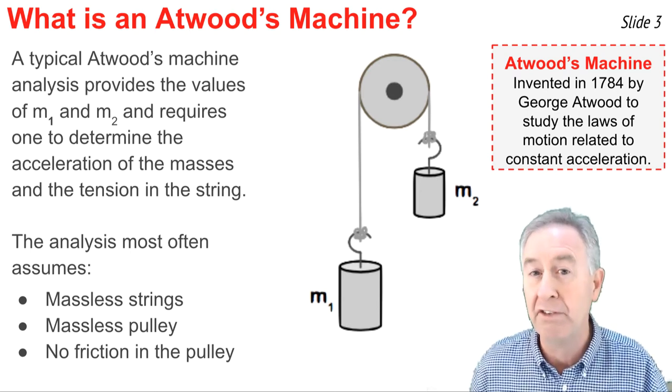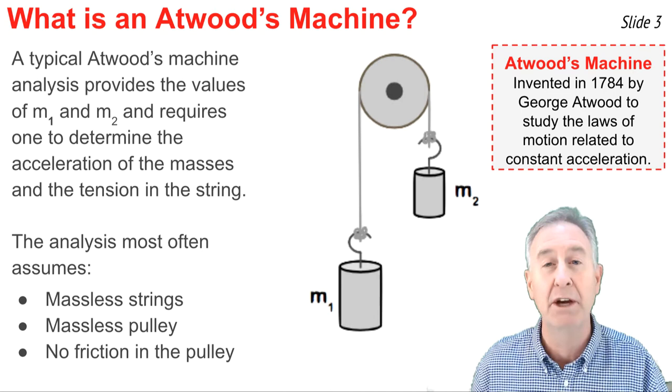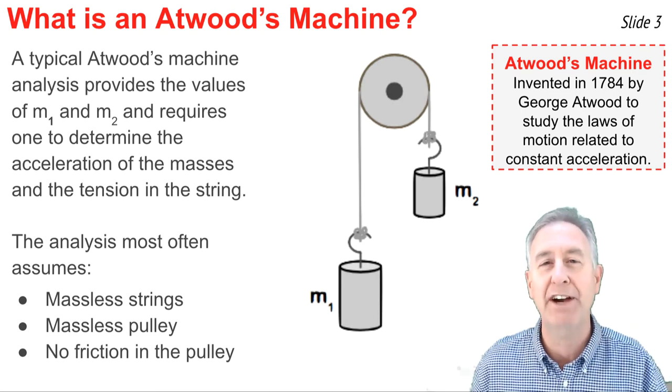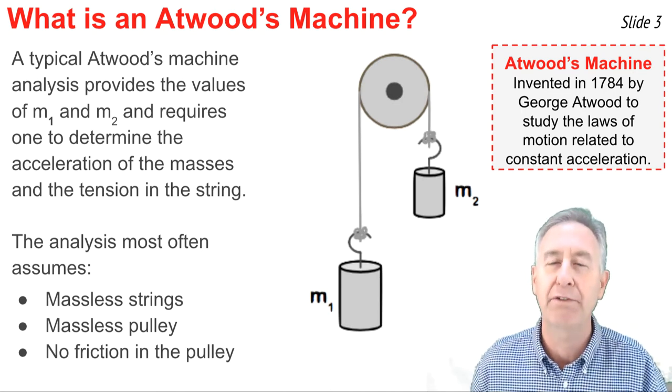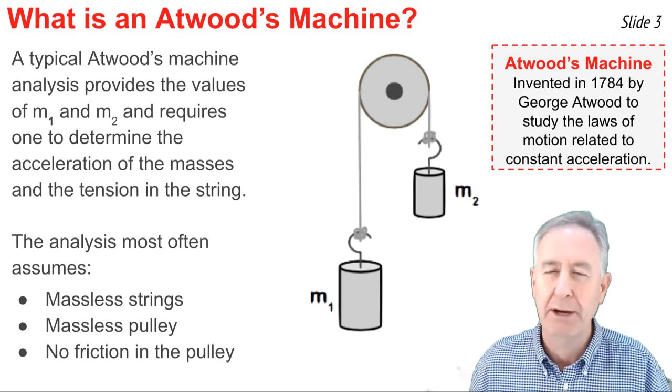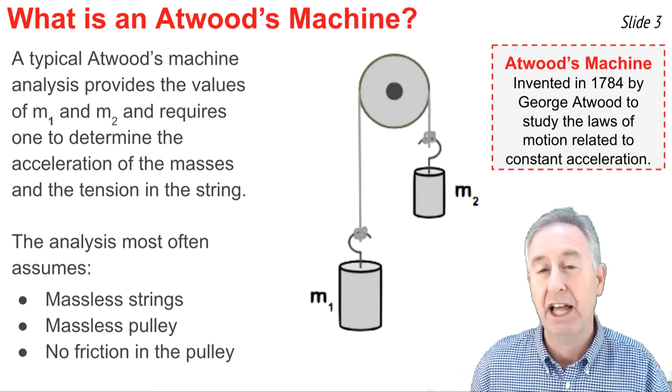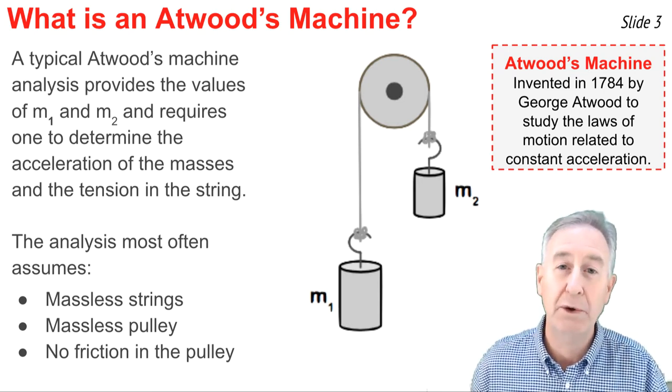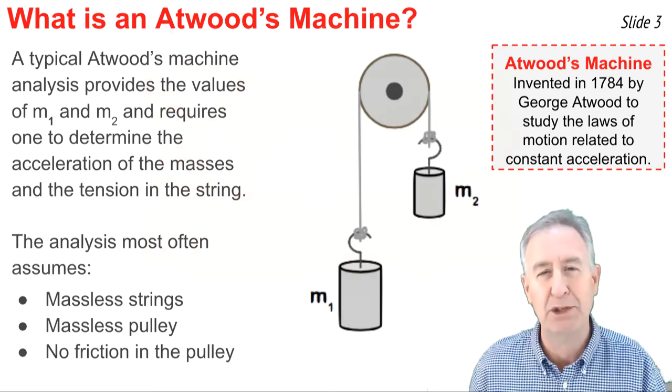That the pulley itself is massless and as it spins does not have any rotational kinetic energy. And finally, that the bearings of the pulley are frictionless. While these aren't perfect assumptions, they are good approximations that allow us to use Newton's second law in order to analyze an Atwood's machine problem.